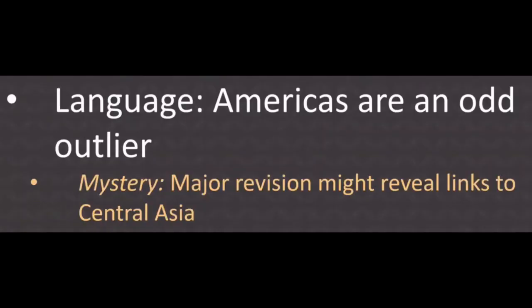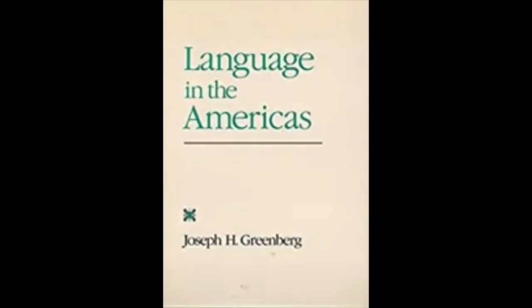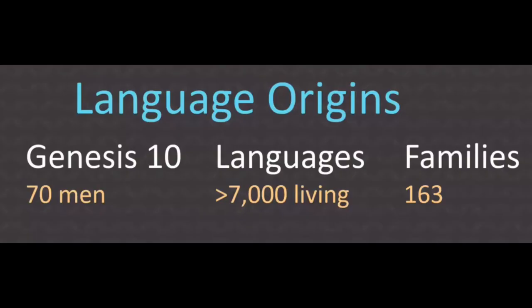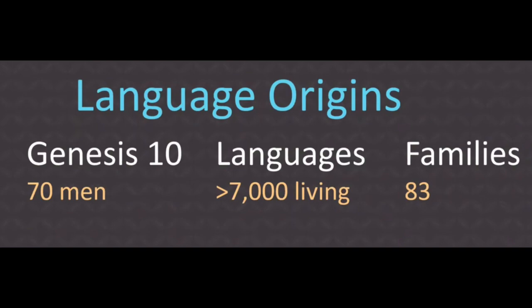Another way to tell is language. Diachronic linguist Joseph Greenberg was investigating languages and discovered that the presumed 163 language families of today is actually much lower, at just 83 or maybe less.